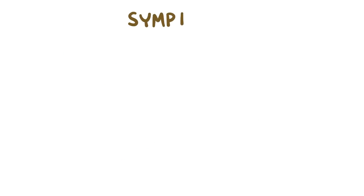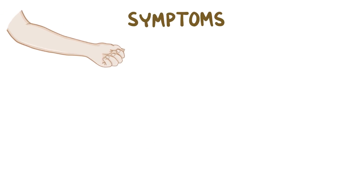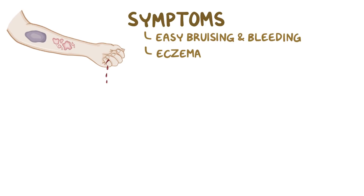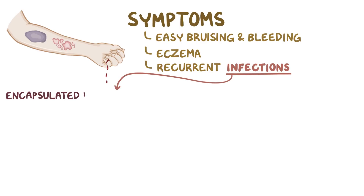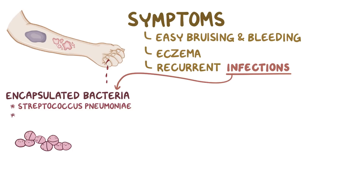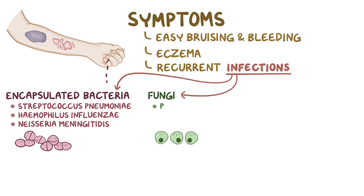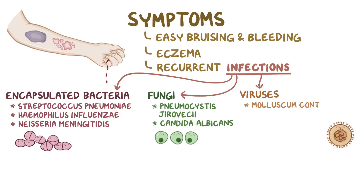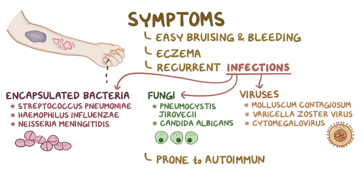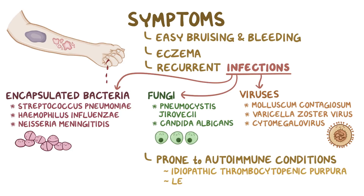The classic triad of symptoms in Wiscott-Aldrich syndrome includes easy bruising and bleeding, eczema, and recurrent infections. The infections are classically due to encapsulated bacteria such as Streptococcus pneumoniae, Haemophilus influenzae, and Neisseria meningitidis. Fungi such as Pneumocystis girovecchi and Candida albicans, and viruses such as Molluscum contagiosum, Varicella zoster virus, and Cytomegalovirus. Individuals are also more prone to developing autoimmune conditions, such as idiopathic thrombocytopenic purpura, and cancers like leukemia and lymphoma.